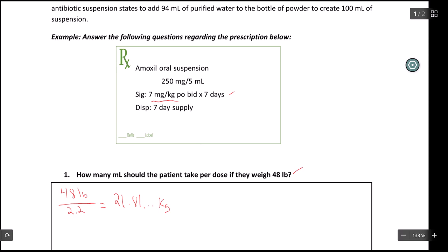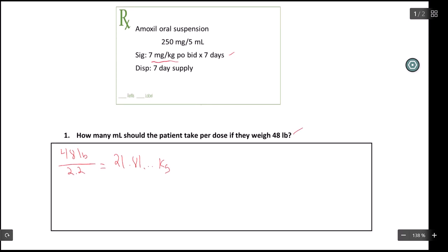Now, it's best if you could keep everything in your calculator at once, so that you round the final answer down. So this is the amount of kilograms, 21.81, that the patient weighs. And the dose is 7 mg per kilogram.